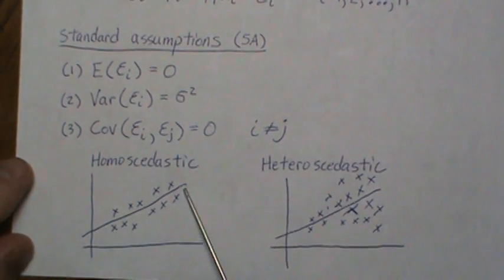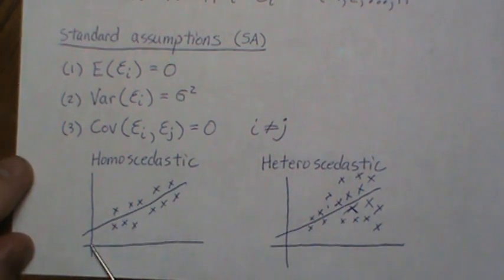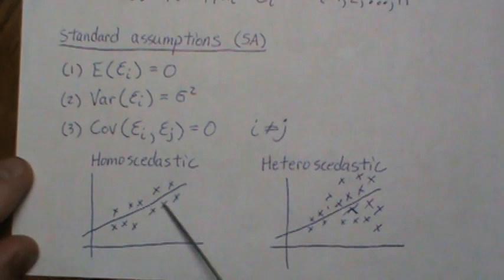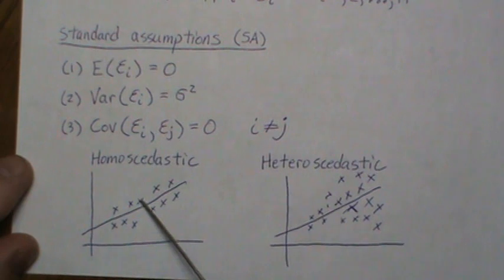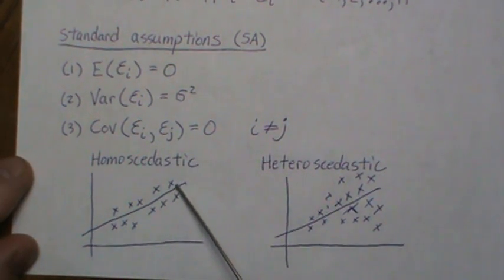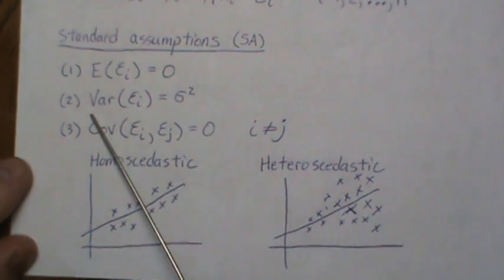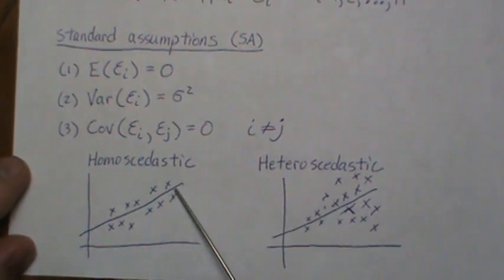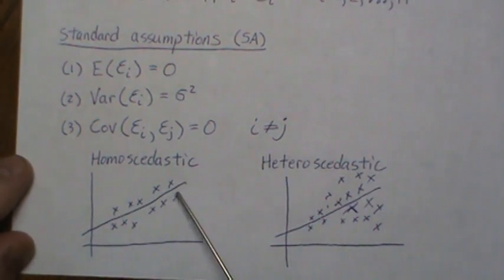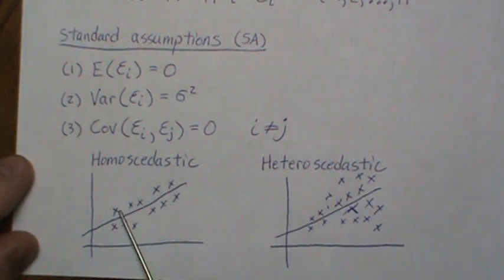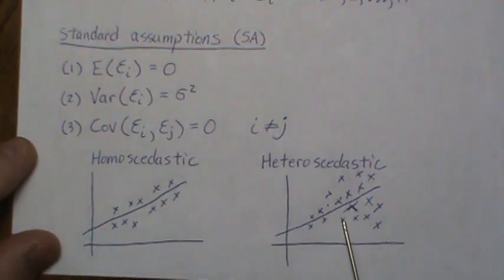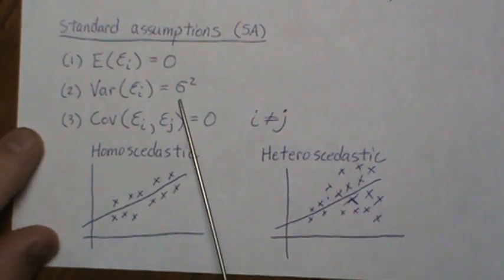Pictorially, the x's look linear and if we put a line through them, the error terms on average are zero — some are slightly positive, some slightly negative. SA2 says there's constant variance about this line; the data points are roughly the same distance from it. SA3 says the error for any one data point has covariance zero with any other.